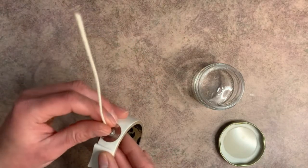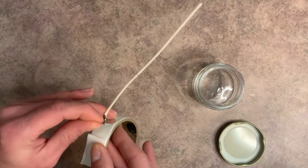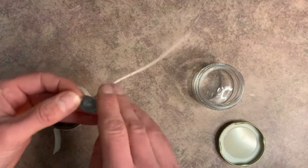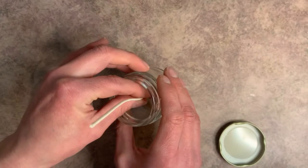And then we're going to open the glue dot, put it on the bottom of the wick tab, and then you just place it in the very center of your candle.